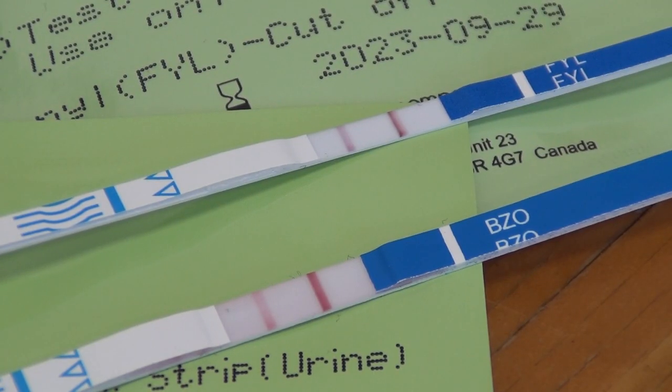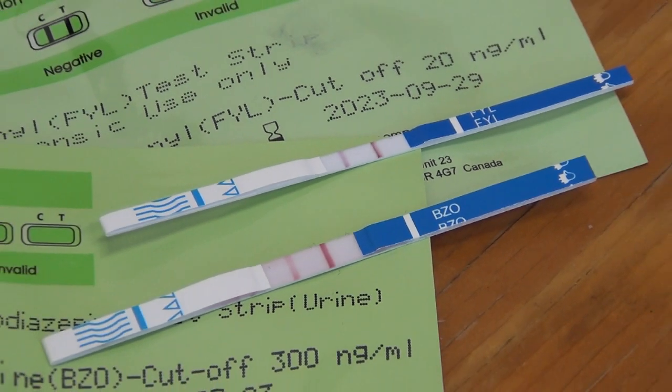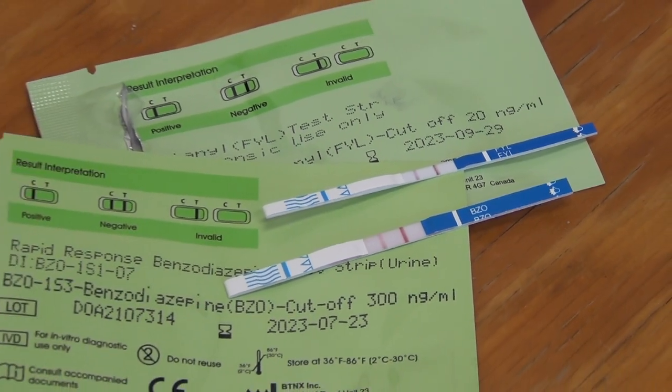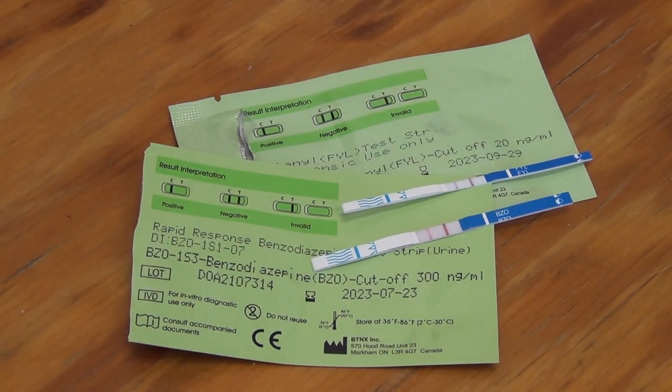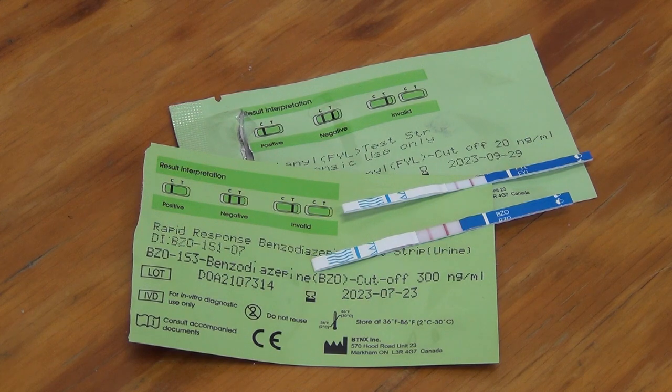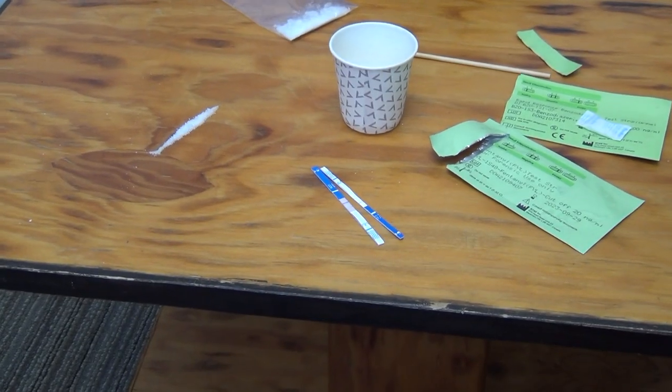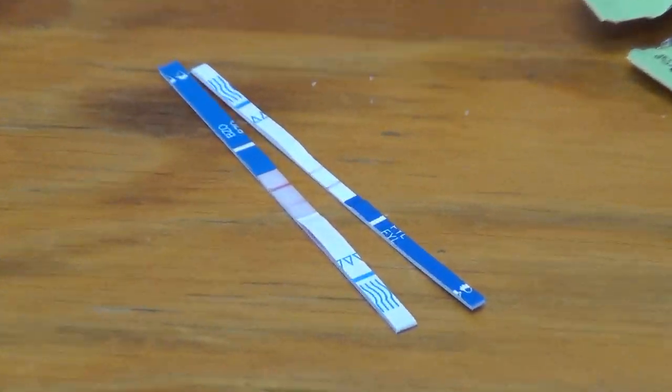These kits only test for the one substance written on the back. If you receive a negative result for fentanyl, there is no guarantee there isn't something else such as benzodiazepines in the supply you tested from. Keep this in mind and test for each substance that you are worried could be present.